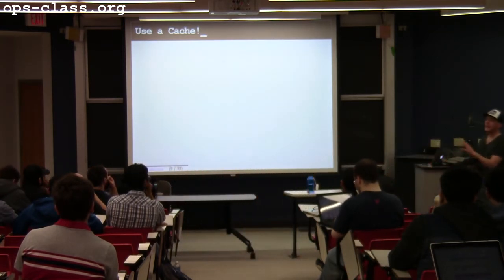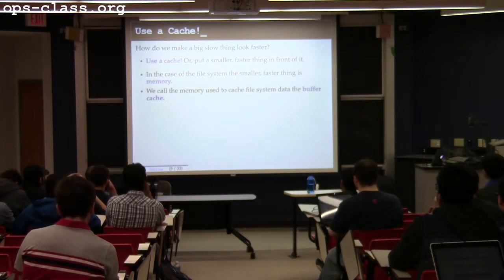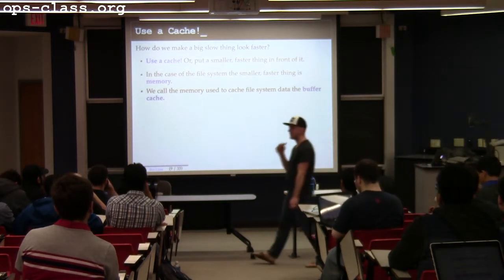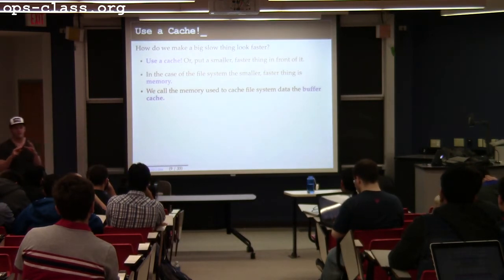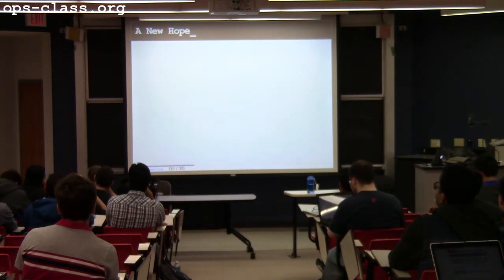We've talked all semester about one of the ways to use this memory: as a cache. I can use a big cache in front of the disk to soak up some of the disk activity. This is part of the goal — this is called the buffer cache, something we talked about last week. LFS really counts on this feature: having a reasonable-sized memory cache sitting in front of the disk that's going to absorb certain types of traffic.